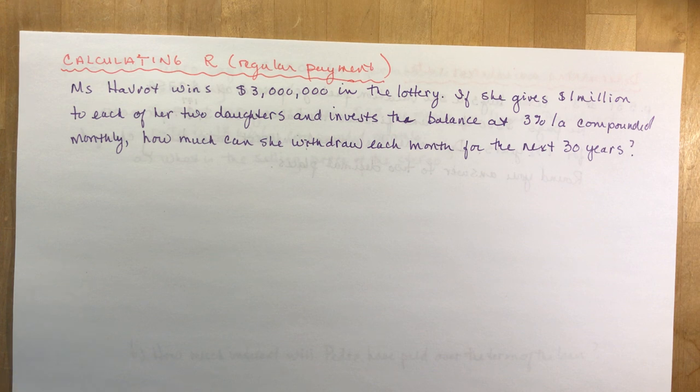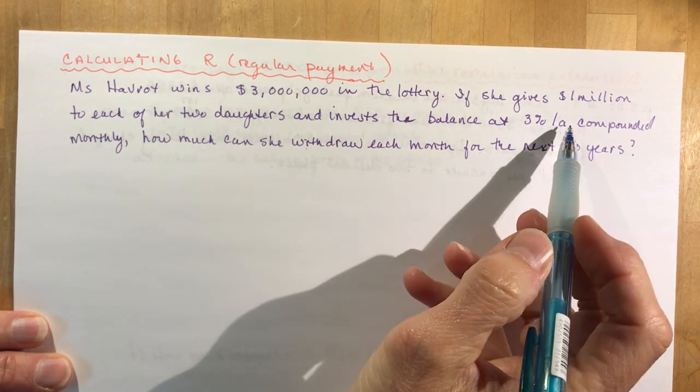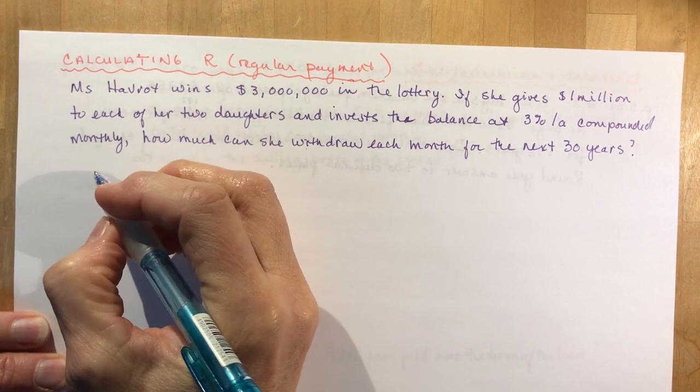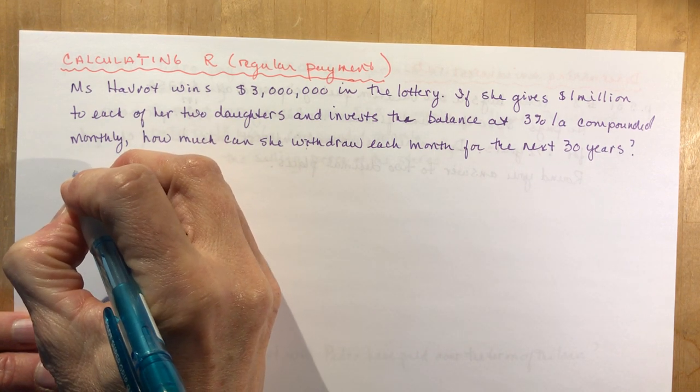This is kind of a good question because you never know when you're going to win a lot of money. As you can see, I gave a million to each of my daughters, who hopefully will manage their money very well. So that leaves me with a million dollars. My present value of my money is $1 million.